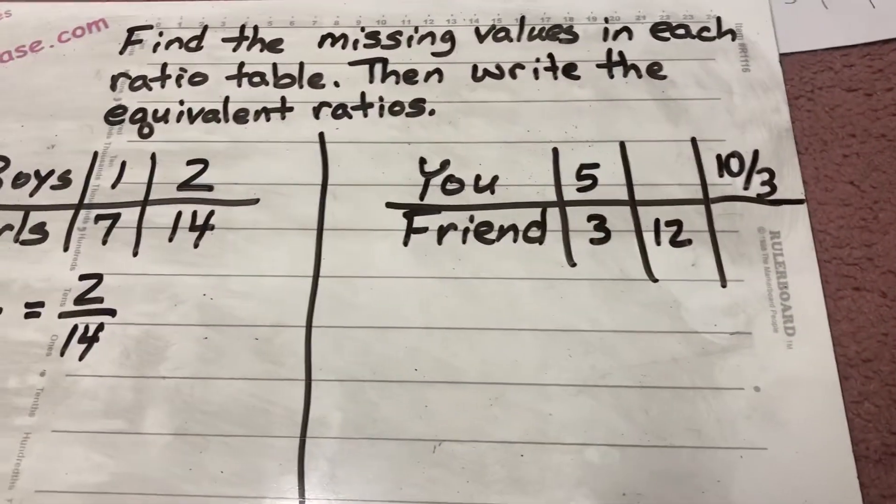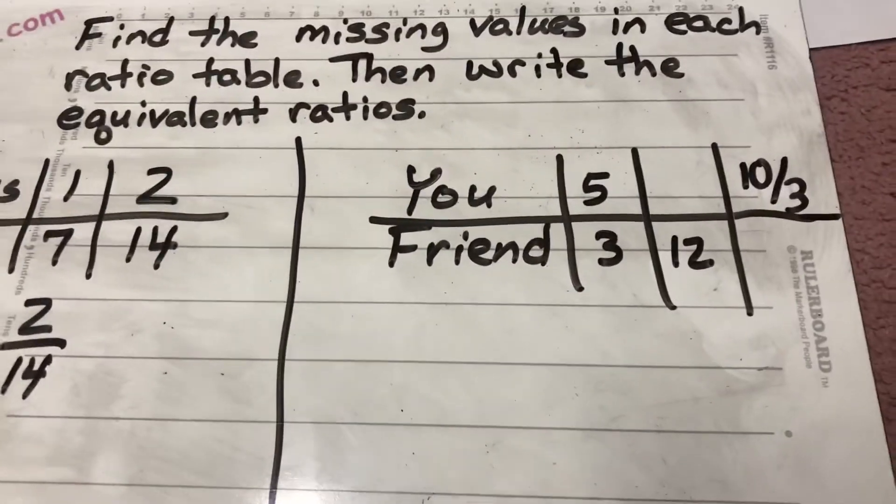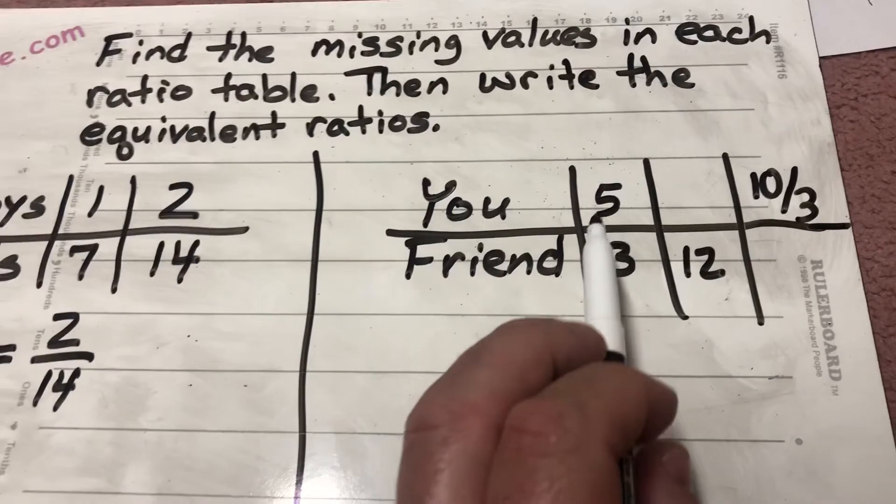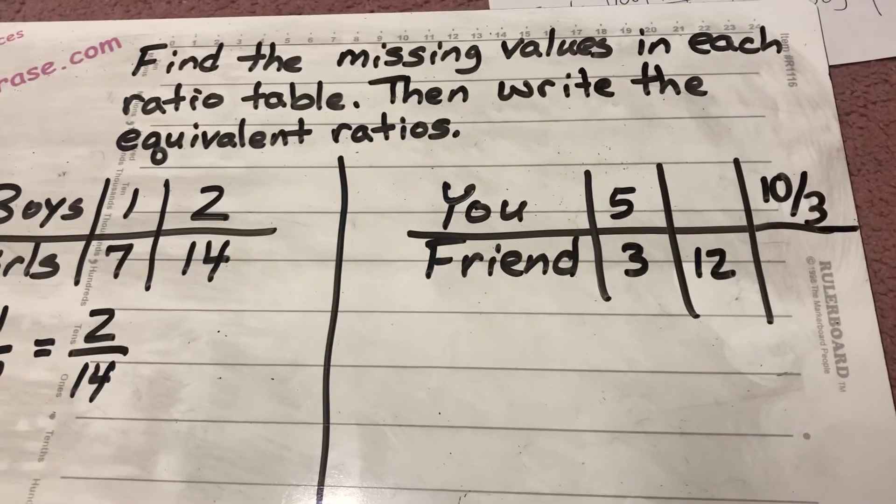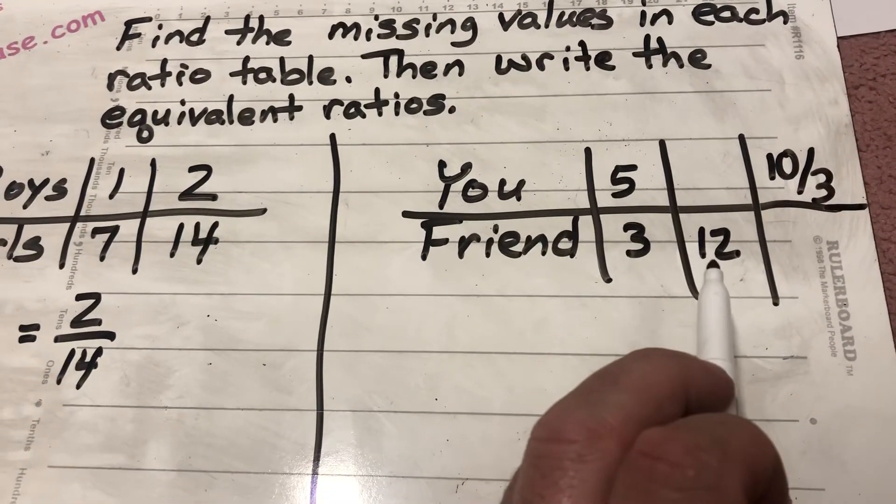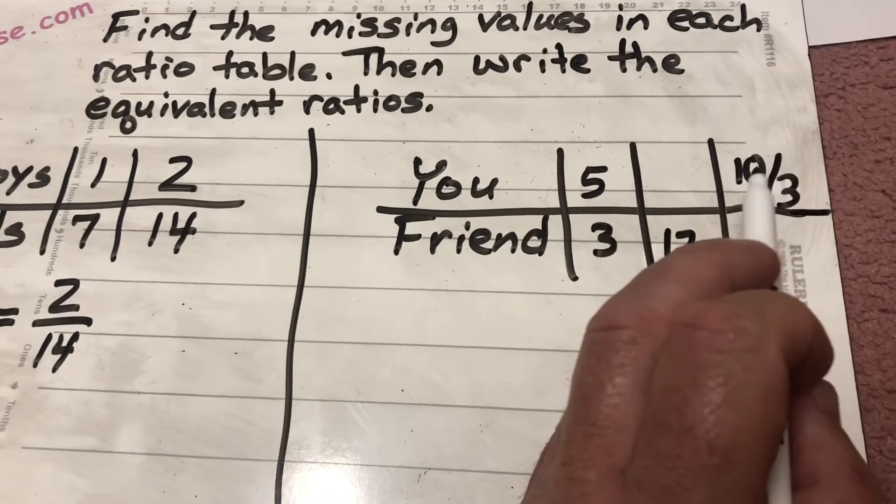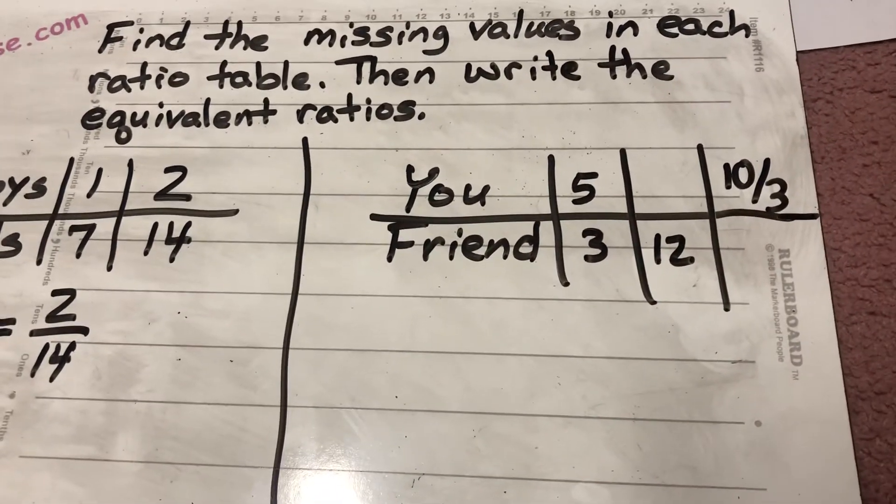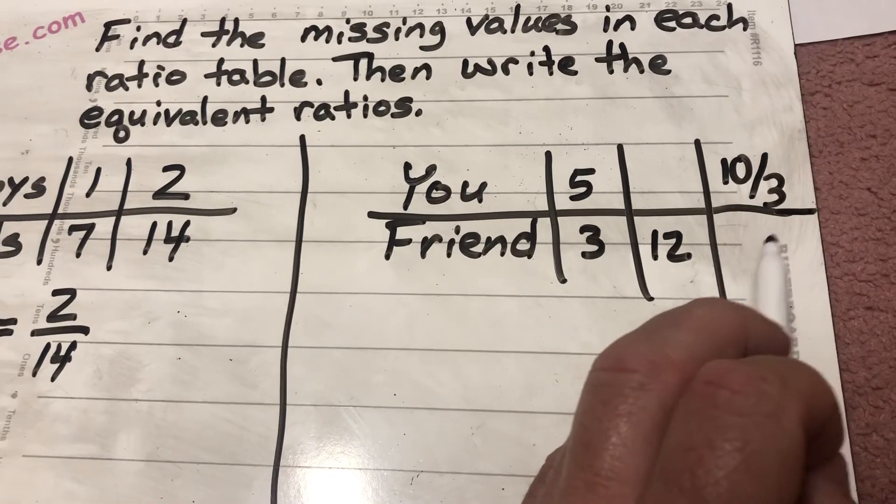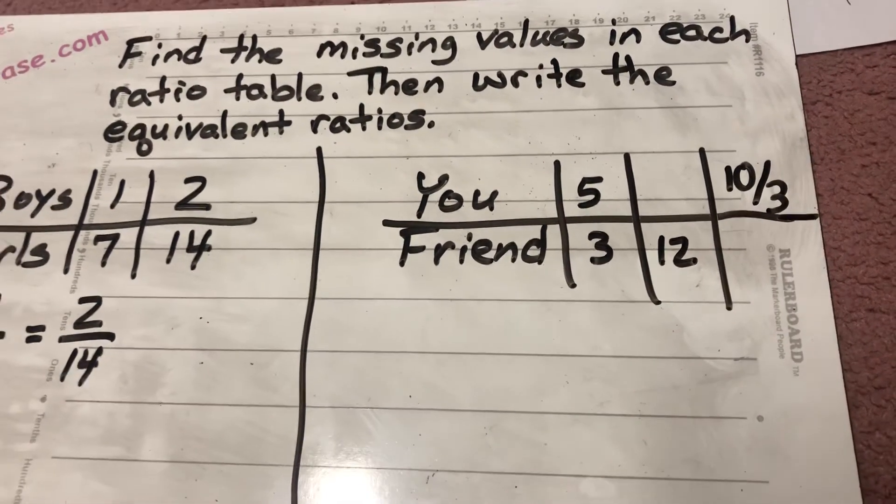Moving right along. You and a friend, not sure really what we're comparing, but when you had 5, your friend had 3. When your friend had 12, we've got to figure out how many you had. And when you had 10 over 3, we've got to figure out what your friend had there.